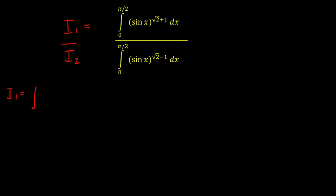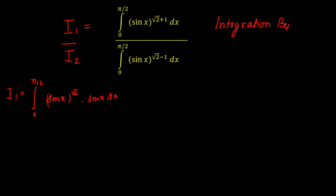I1 is the integral from 0 to π/2 of sin(x) raised to the power (√2 + 1). I'm going to write sin(x)^(√2+1) as sin(x)^(√2) multiplied by sin(x) dx. Now if I apply integration by parts here, I'll directly get the relationship between I1 and I2. I'll explain why I'm applying integration by parts at the end.